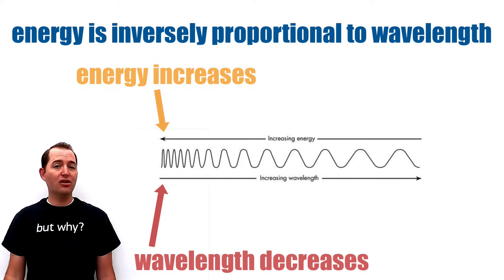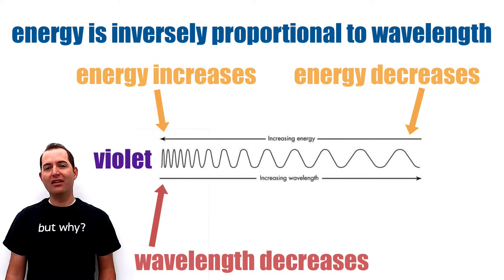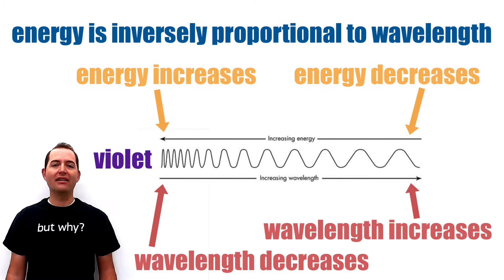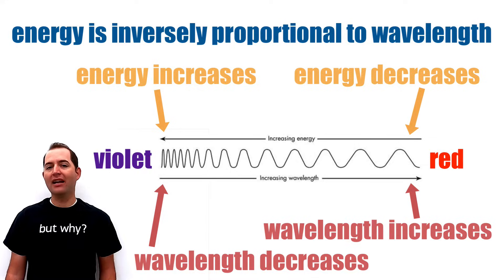This results in colors closer to the violet end of the spectrum. As the energy of the photon decreases, the wavelength increases. These are colors closer to the red end of the spectrum.